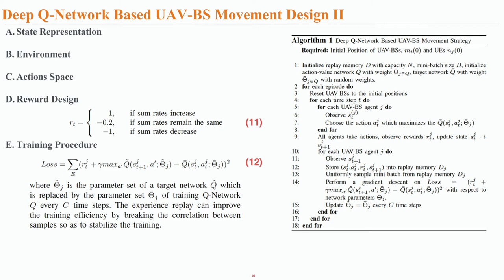More particularly about the training procedure: in each episode, a predetermined batch size of experiences are uniformly sampled to update theta using the gradient descent method to minimize the loss function as formulated in equation 12. It is also very critical to mention that experience replay can improve the training efficiency by breaking the correlation between samples in order to stabilize the training.